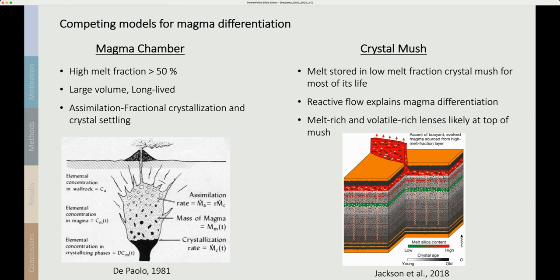More recently the crystal mush model has gained popularity and it predicts that melt is stored in low-melt fraction crystal mush for most of its life and that differentiation happens mostly by reactive flow through the crystal mush. Melt-rich and volatile-rich lenses likely exist at the top of the mush and these feed eruptions.